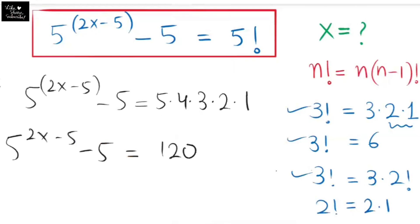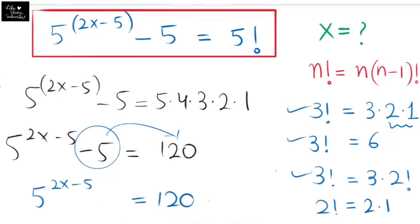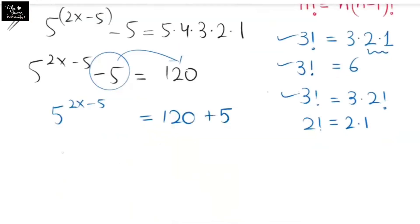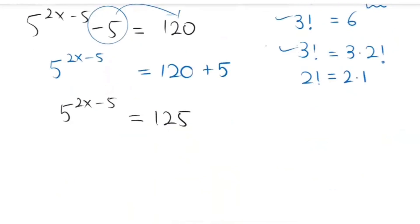5 times 4 times 3 times 2 times 1 equals 120. Taking the negative 5 to the right-hand side, this turns to positive 5. So 5 to the power of 2x minus 5 equals 120 plus 5, which equals 125. Now I'm going to change 125 into the form of a power: 5 to the power of 2x minus 5 equals 5 to the power of 3, since 5 cubed gives us 125.